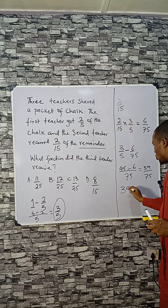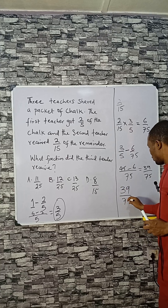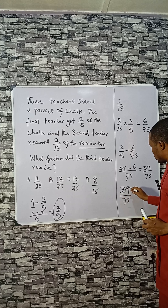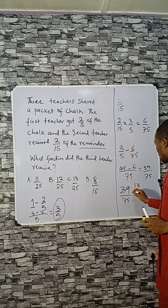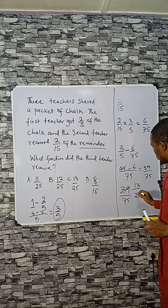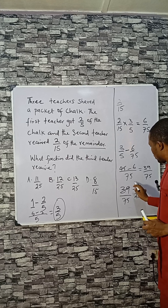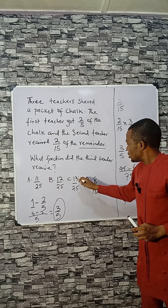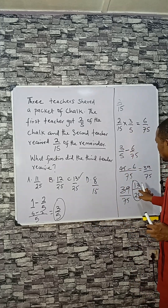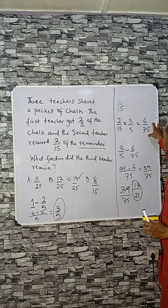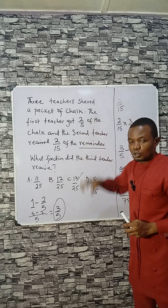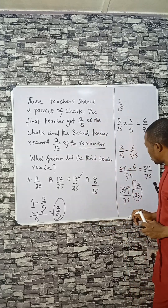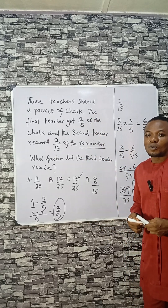Now we simplify 39/75. Dividing both by 3: 39 divided by 3 is 13, and 75 divided by 3 is 25. So the answer is 13/25, which is the fraction received by the third teacher, and the answer is C. To verify, you can add all three fractions and they should sum to 1. Like, share, and subscribe for more. Bye bye!